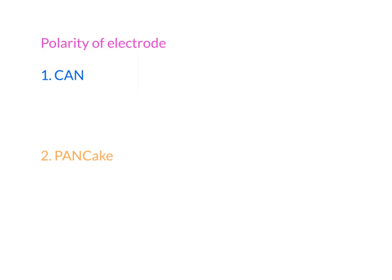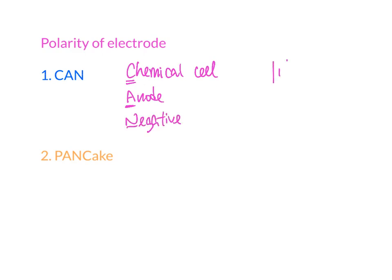The first mnemonic to memorize is CAN — C-A-N — which stands for Chemical Anode Negative. So when you see a chemical cell, the negative terminal, which is the shorter one, will be the anode.